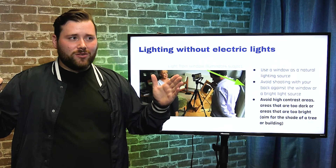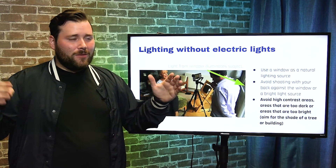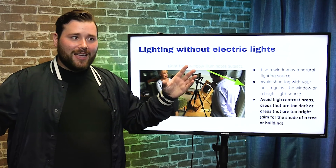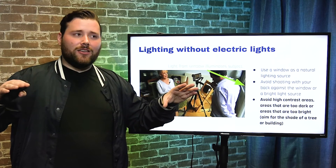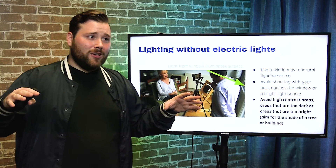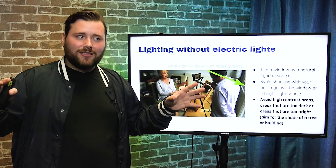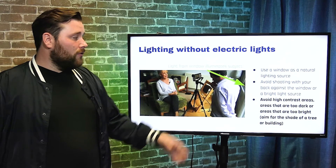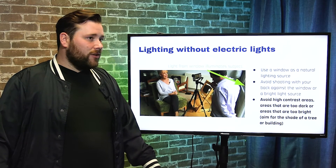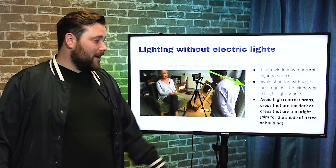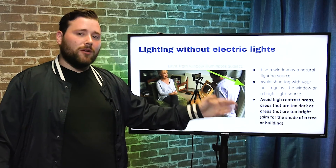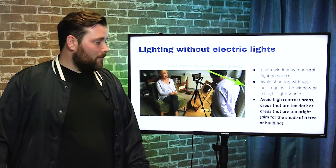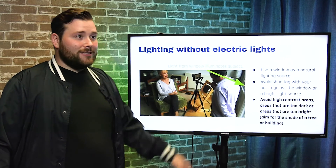Also avoid high contrast areas — places that are too dark or too bright. That's why overcast days are great: everything is evenly lit and the light is diffused. On a bright sunny day it's too bright, you're squinting, and shadows under trees are very dark and harsh. But on an overcast day everything looks a lot better. If you're shooting outside on a sunny day, aim for the shade of a tree or a building — it's also cooler for your subject.